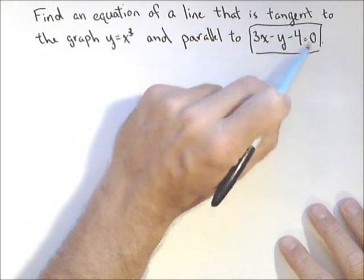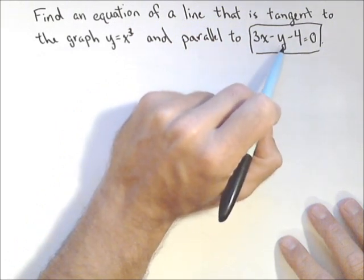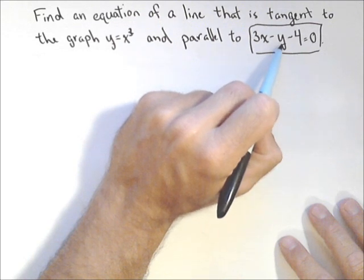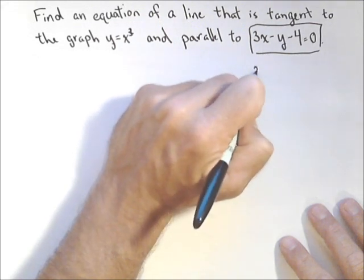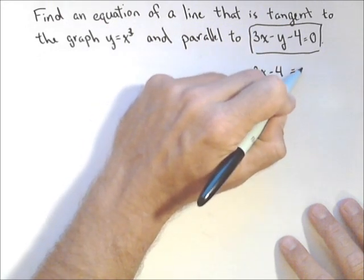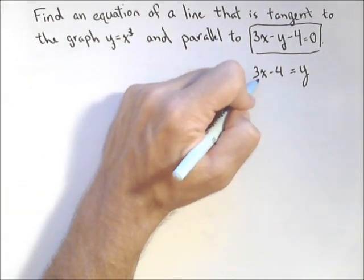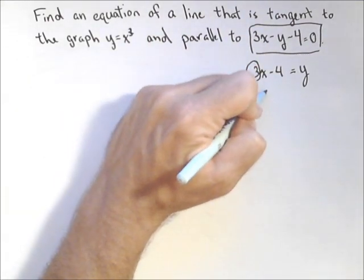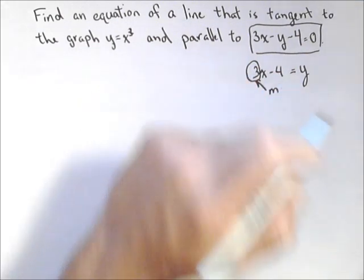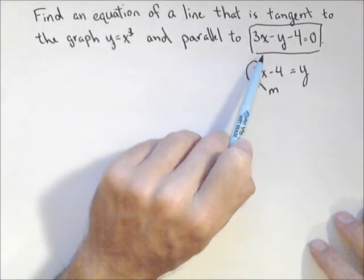Easiest way to do that is to get this into slope-intercept form. Basically solve it for y. So I can do that real quick by adding y to both sides, and I get 3x minus 4 equals y, and I now have my m. Remember, the mx plus b form? There's the slope. So that's the slope of the tangent line, because we want it to be parallel to this given line.